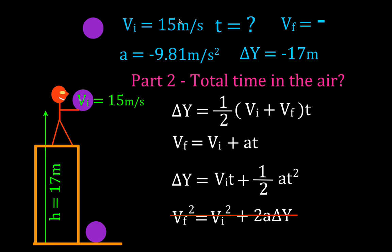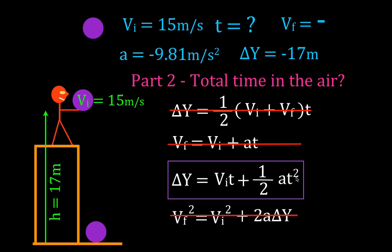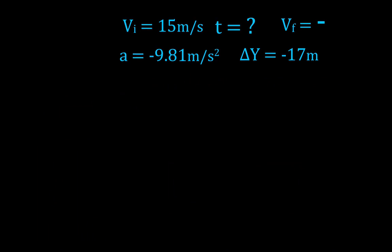The equation must contain change in position, acceleration, and time. One equation has time but also requires the final velocity, which we don't know, so we cannot use it. Another equation also has both time and final velocity, so that one is out too. The correct equation has time, and it also contains the three variables we know: acceleration, initial velocity, and change in position. That is the equation we are going to use.